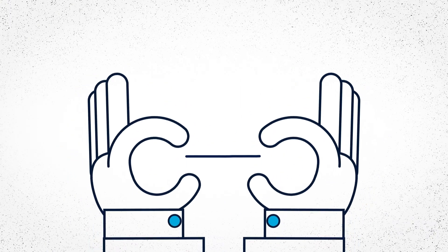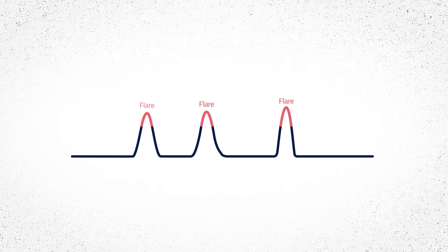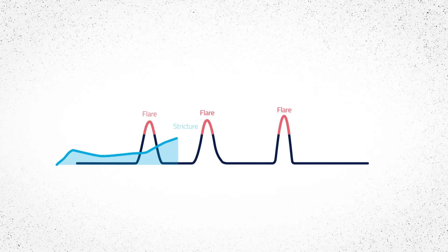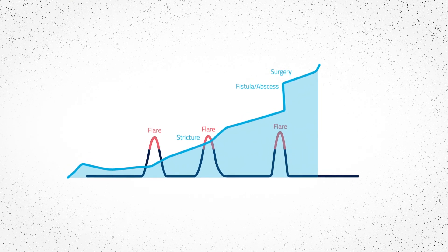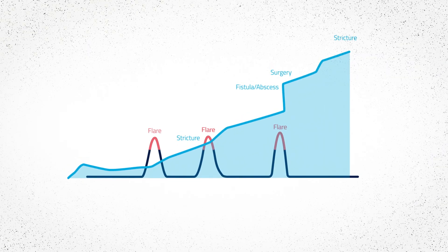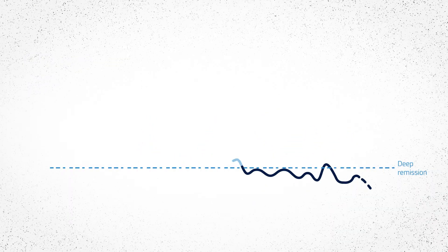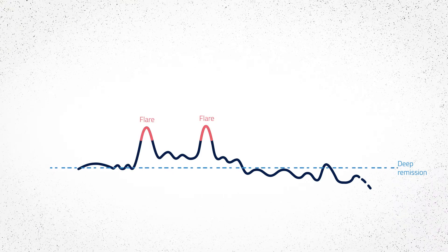Crohn's disease and ulcerative colitis are characterized by periods of symptomatic flare which are hard to predict. Uncontrolled inflammation frequently persists even in the absence of clinical symptoms and results in irreversible bowel damage. Prolonged deep remission, where both symptoms and gut inflammation are absent, is therefore a central long-term goal of therapy.